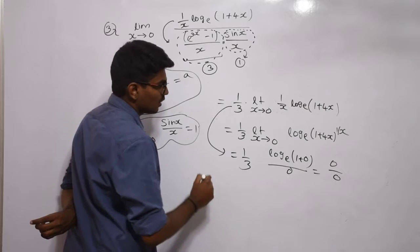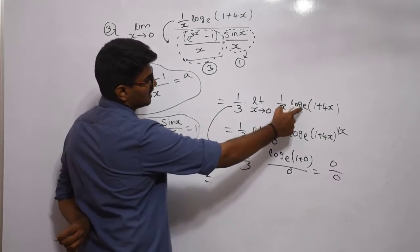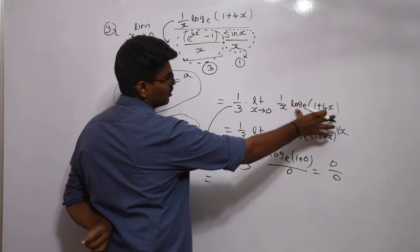What is the next step? Differentiate the numerator and denominator separately. The numerator is 1/(1+4x) times—first I differentiate the complete term.